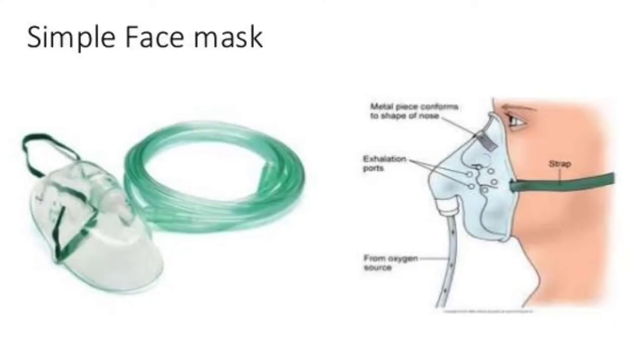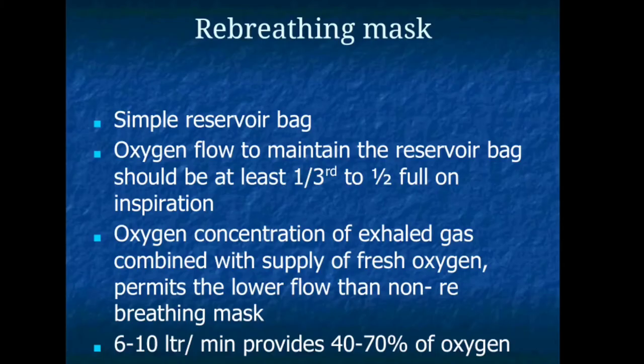Next, simple face mask. A simple face mask is usually used for a patient who requires a moderate flow rate for a short period of time. It has the ability to deliver oxygen concentration of 40% to 60% FiO2 with a flow rate of 6 to 10 liters per minute. Because carbon dioxide can build up in the mask, do not use a flow rate lower than 6 liters per minute with this type of mask.